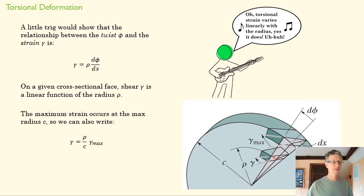The maximum strain occurs at the maximum radius c. If we know the gamma max, then we can find that gamma at any point in the disk by figuring out how far out from the center we are.